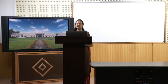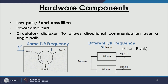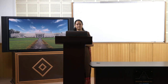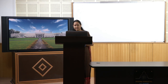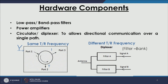The circulator or diplexer allows directional communication over a single path. The circulator has three ports — port 1, port 2, and port 3. These circulators are made of ferrite elements. Whenever you apply a signal at port 1, it passes to the next port but not to the port after that. So S21, which allows the signal to pass, is high, while the isolation is also high so the signal does not go to the third port.